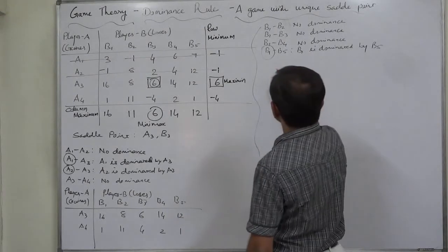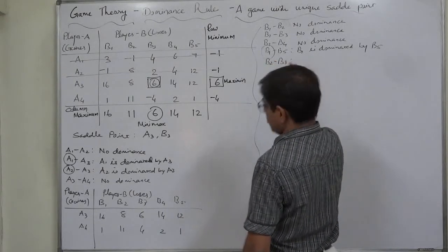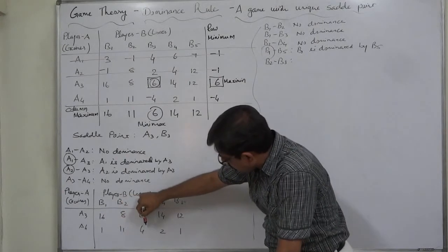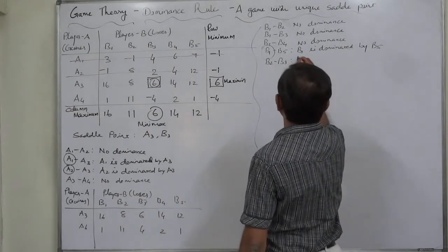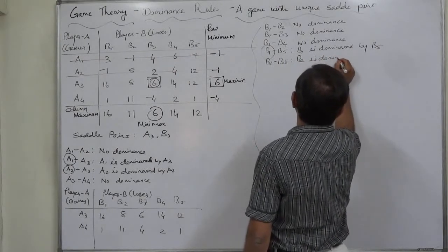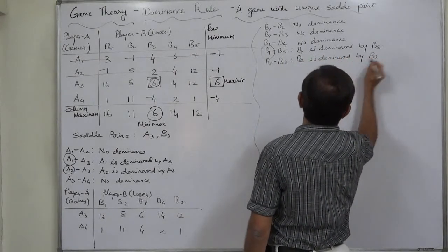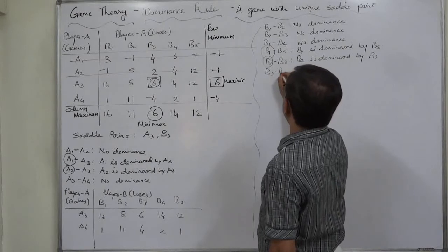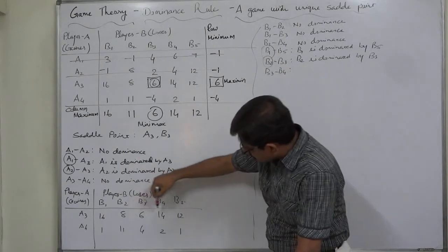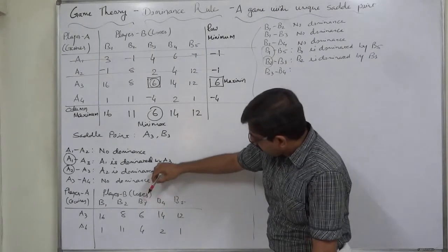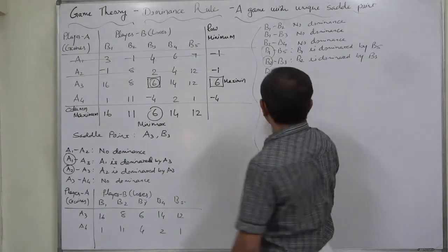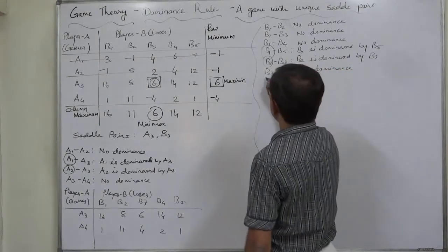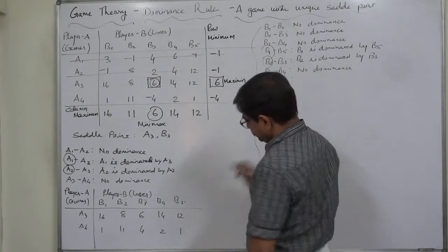Now comparing B2 and B3: B2 loss 8, B3 loss 6 — B3 dominates. B2 loss 1, B3 loss 4 — only one dominance. So B2 is dominated by B3; we delete B2. Now B3 and B4: B3 loss 6, B4 loss 14 — B3 dominates; B3 loss 4, B4 loss 2 — B4 dominates. So no dominance between B3 and B4.